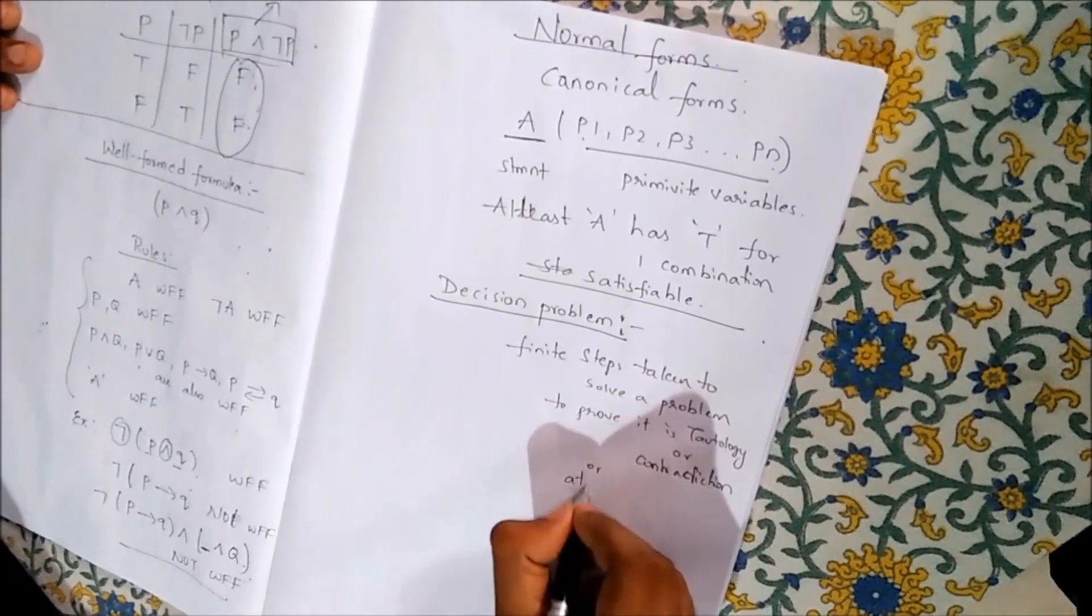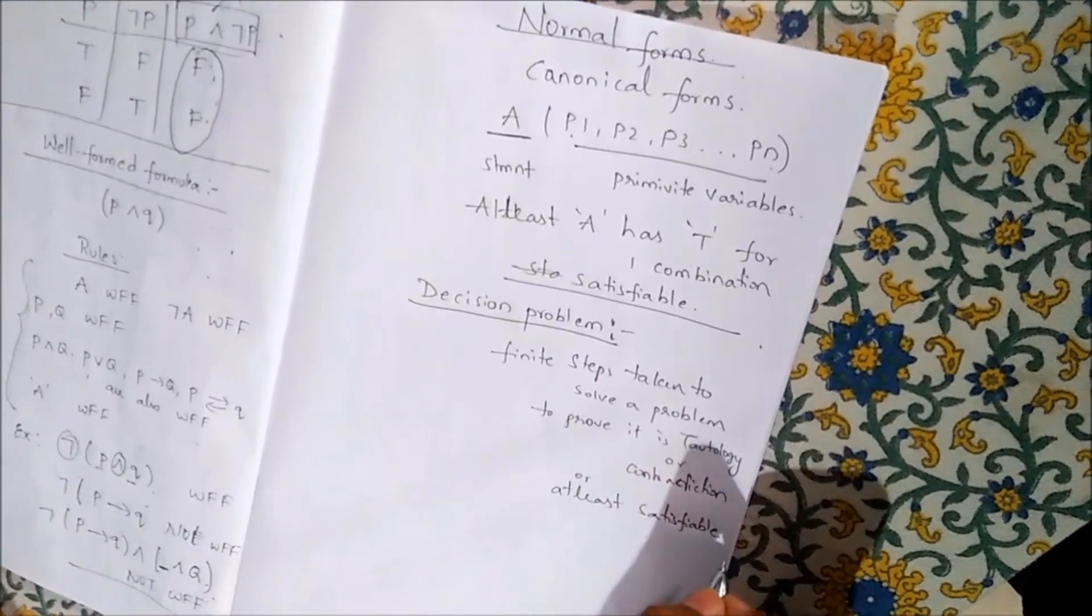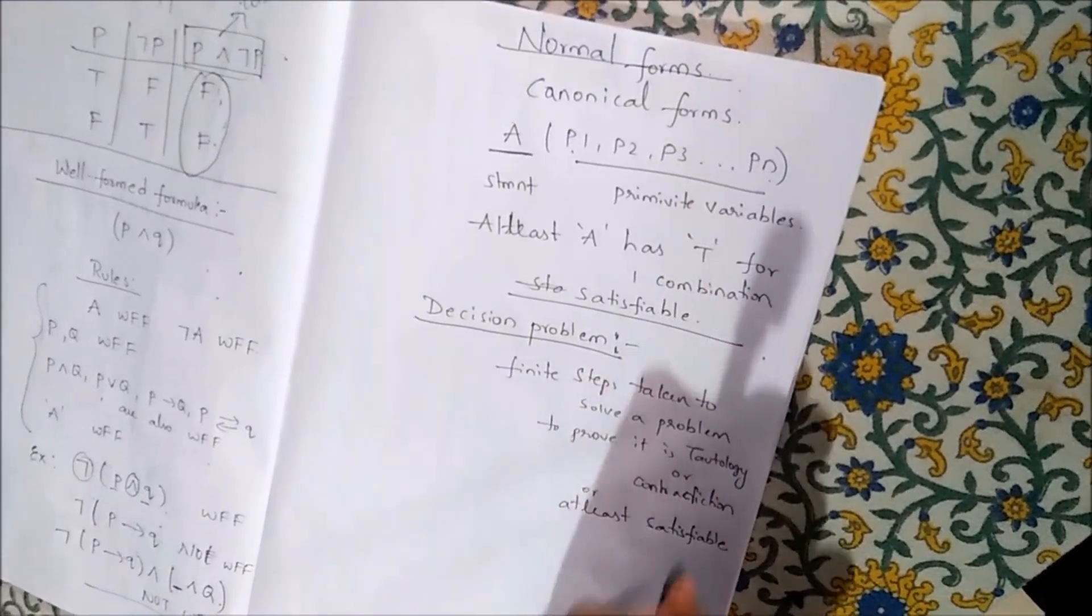To prove it is tautology or contradiction, or at least satisfiable, at least one combination should be true.